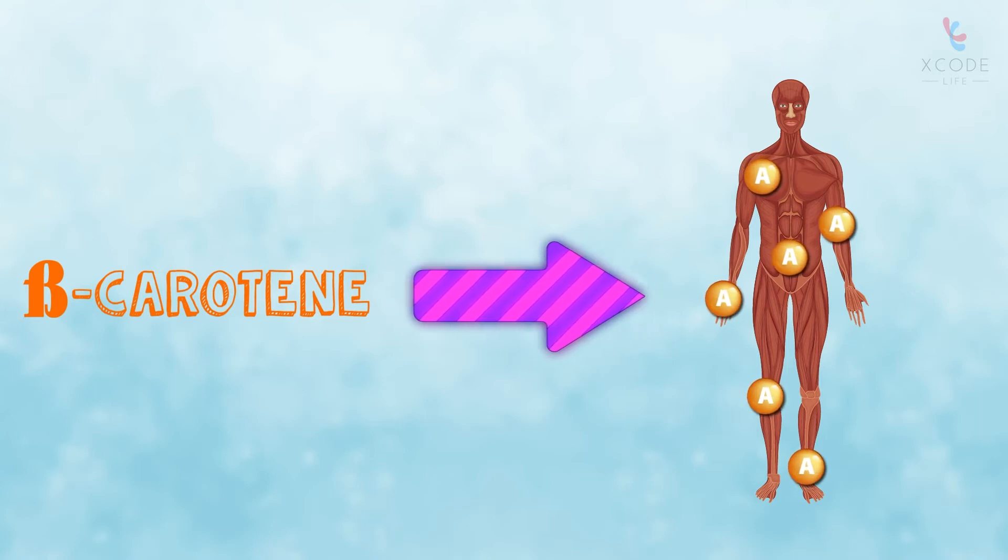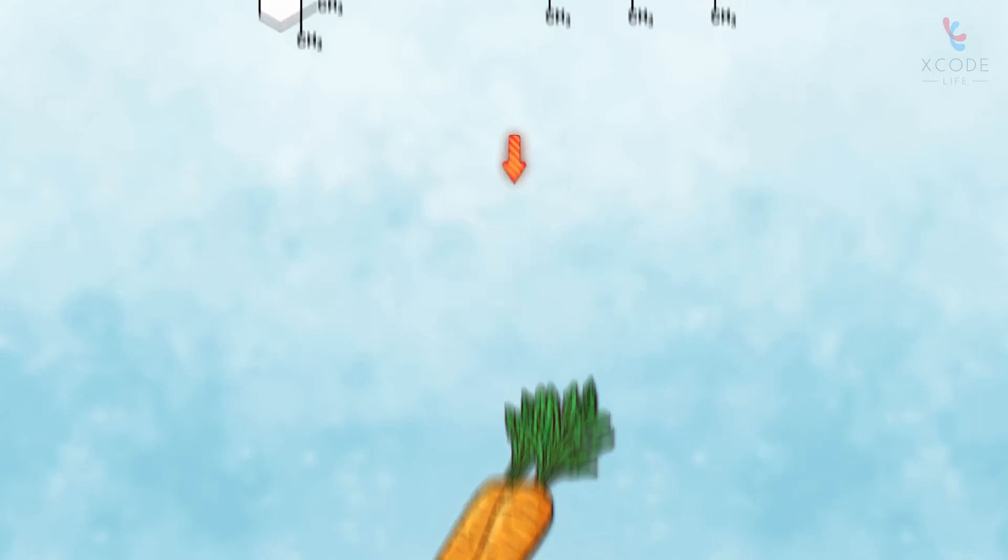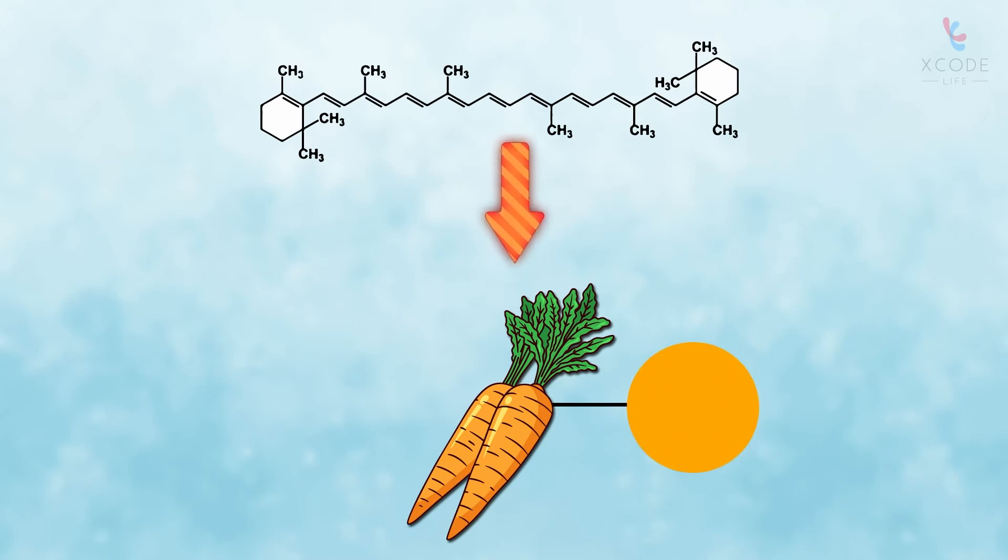Beta-carotene is what is responsible for the bright orange color of the carrot.